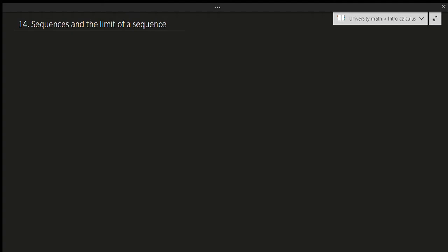So what is a sequence? A sequence is just a list of numbers. This list could be infinitely many numbers, or it could be a finite list of numbers. But generally, we tend to use a finite number of terms — so it could be finite or infinite.